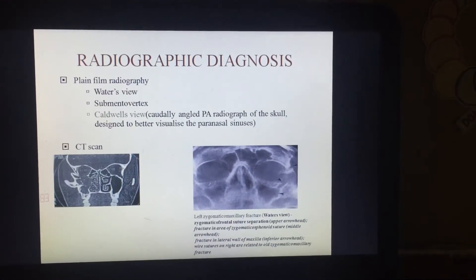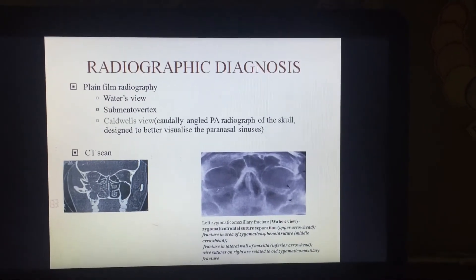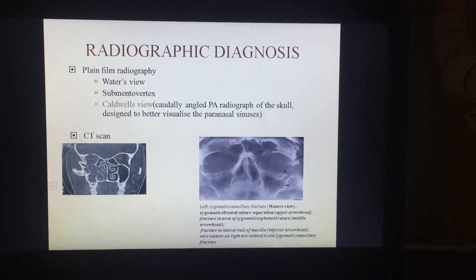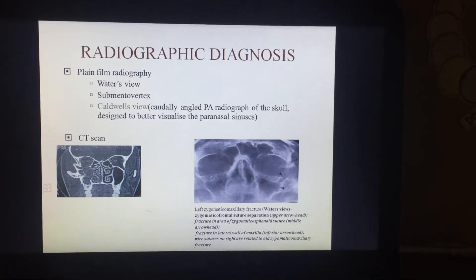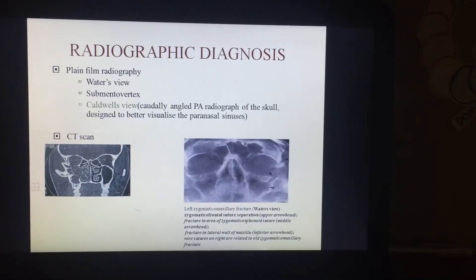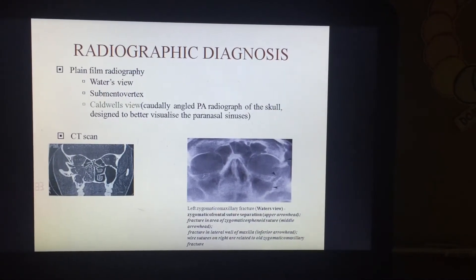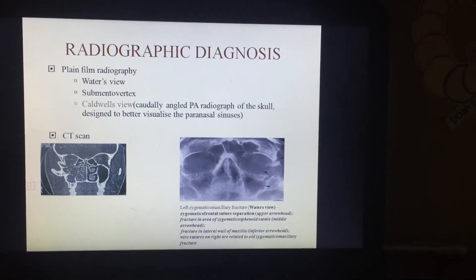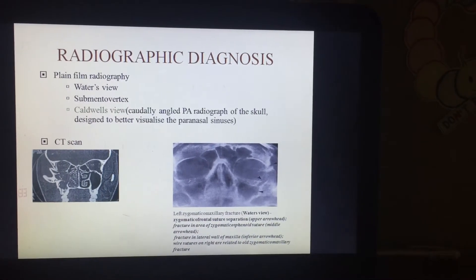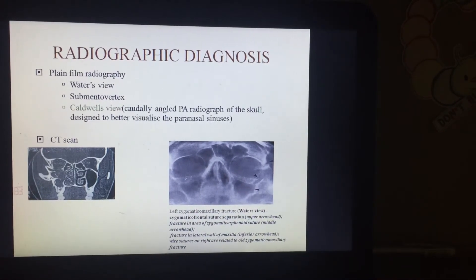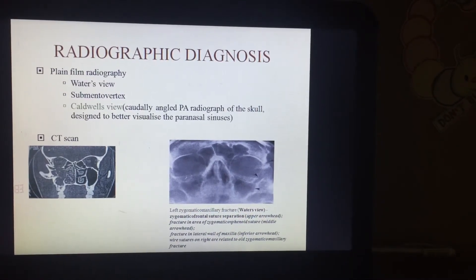When we talk about radiographic diagnosis, we need to understand which radiographs are most important to identify a case of zygomatic fracture. All radiographs in which we can clearly see the zygomatic bone are of radiographic importance. The first is the Water's view, second is the submentovertex view, and third is the Caldwell's view — a caudally angled posteroanterior radiograph of the skull designed to better visualize the paranasal sinuses.